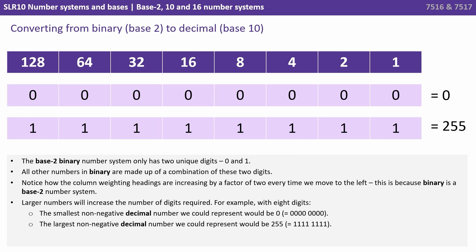Larger numbers will increase the number of digits required. For example, with 8 digits, the smallest non-negative decimal number we could represent would be 0 and that would be a 0 in each of the 8 column positions. The largest non-negative decimal number we could represent would be 255 and that would be represented with a 1 in every single column.